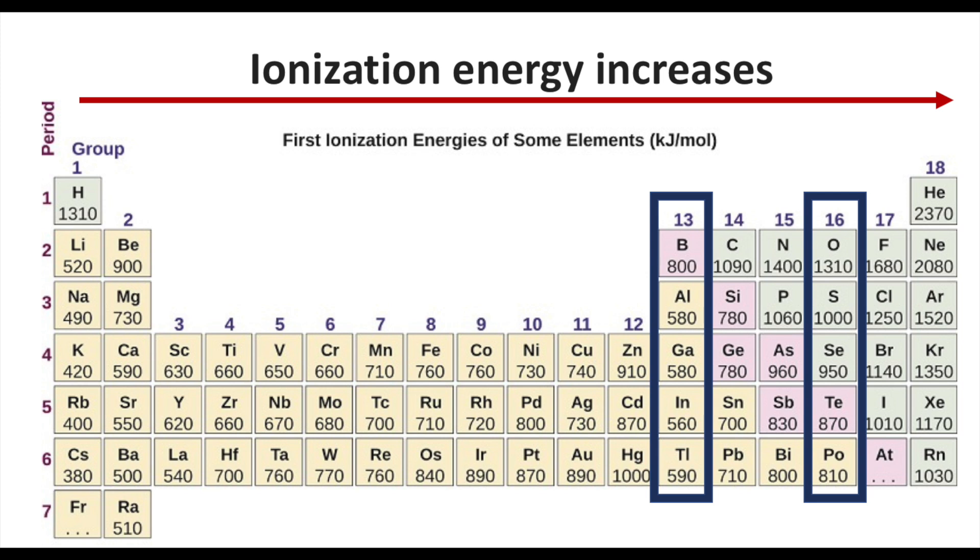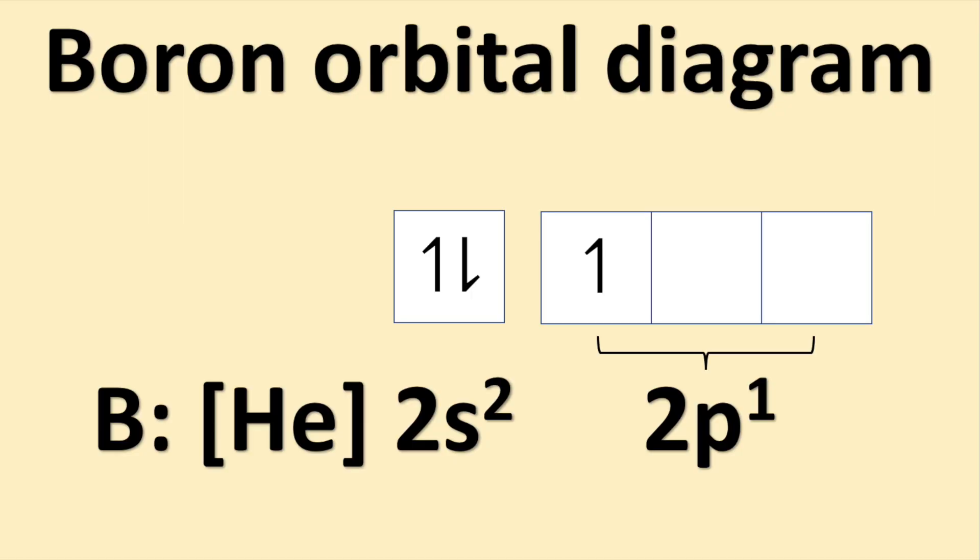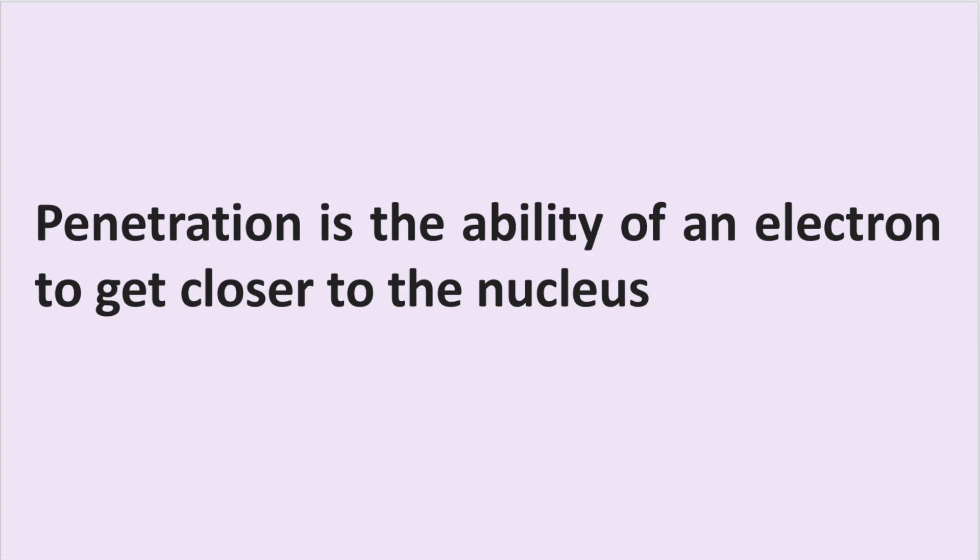Well, in order to understand this, we need to first talk about the stability of orbitals and effective nuclear charge. Let's look at the electron configuration for boron, which is helium 2s2 2p1. Even though boron has a large effective nuclear charge in comparison to beryllium, because it has an additional proton, the p orbital is further away from the nucleus, and it is not able to penetrate nearly as well as the electron in the s orbital.